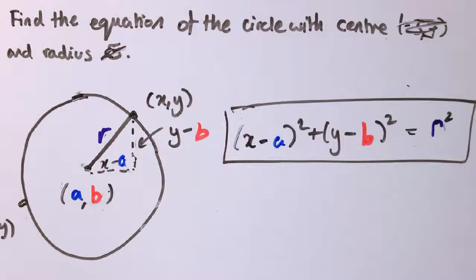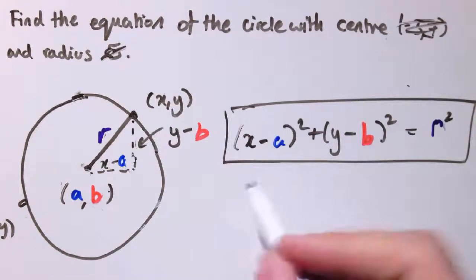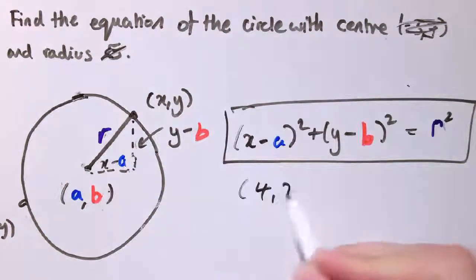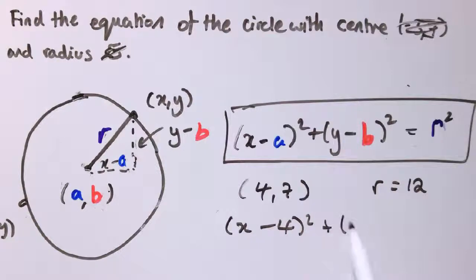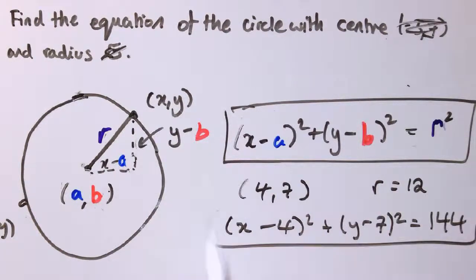So actually again, once you've got that formula and you're happy you know that it's true, if I said I want to circle through 4, 7 with radius 12, you could just plug this in here. I get x minus 4 squared plus y minus 7 squared is 12 squared. That would be the equation of circle through 4, 7 with radius 12.